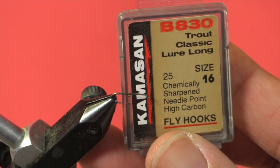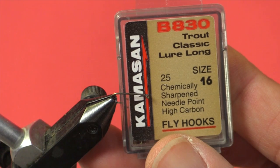Let's start by looking at materials. We're going to use a size 16 dry fly hook. I should mention that this fly is basically a size 14, but we're going to use a size 16 hook because the body's so small.